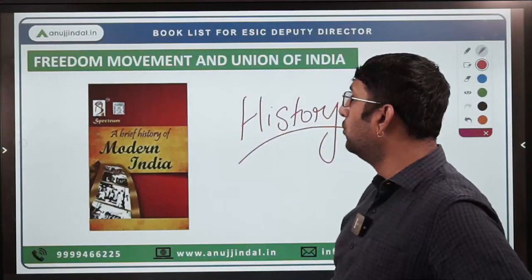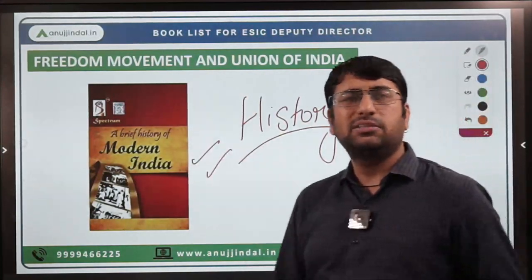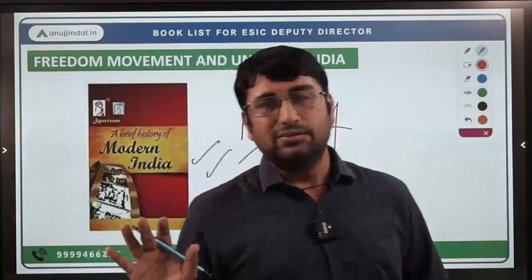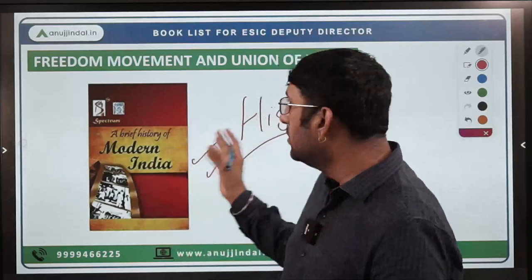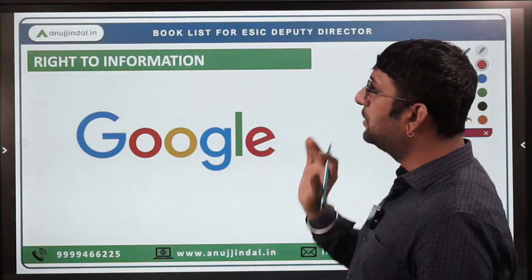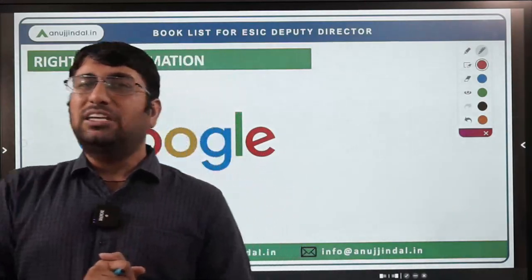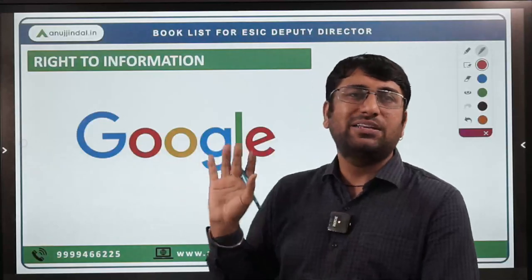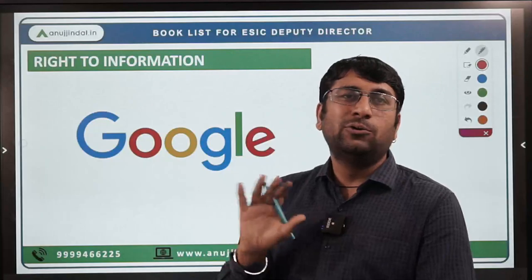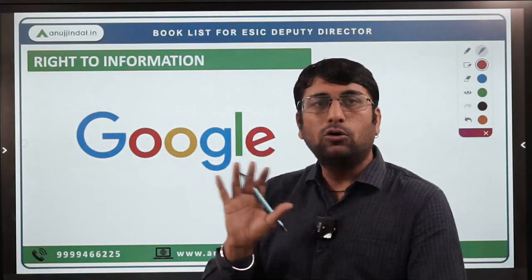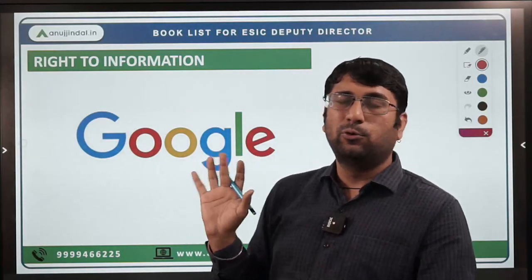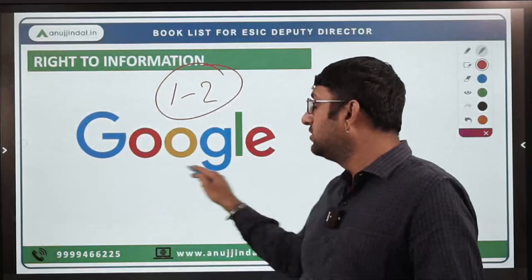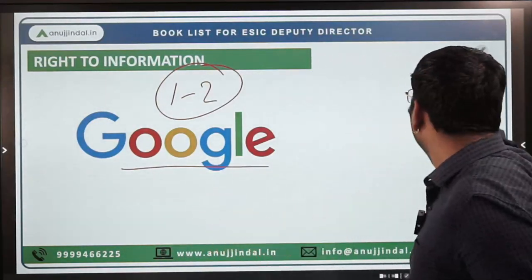For Modern India history, there is a best book — Spectrum's Modern India. If you cover even the important topics from this book, the questions from this section can be answered well. For the RTI Act 2005, it is not a very large act and only one to two questions were asked in the 2011 paper analysis. You can Google a comprehensive summary or refer to a reliable source, revise it once, and go over it two times.